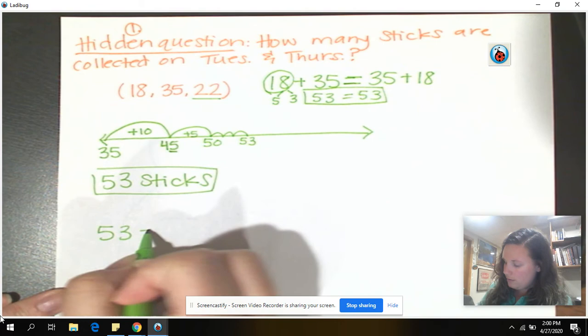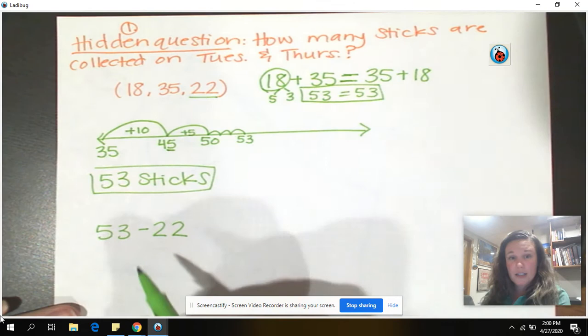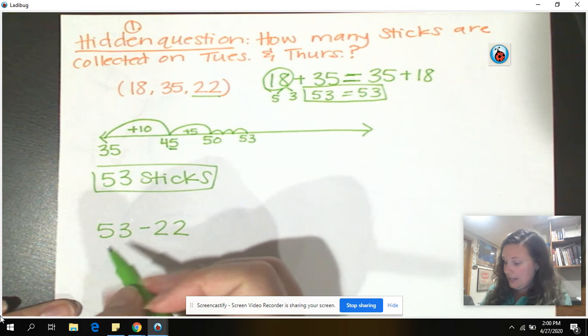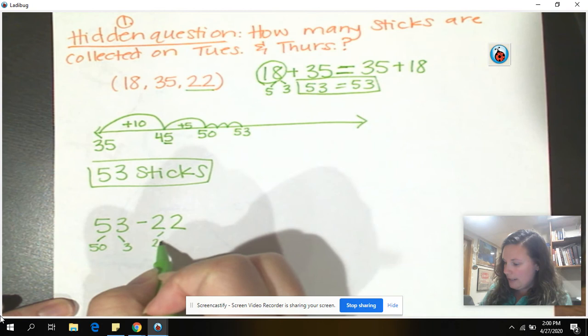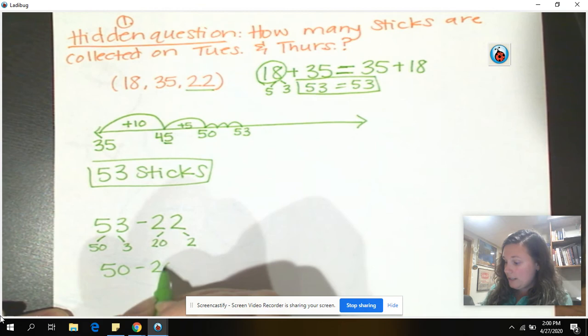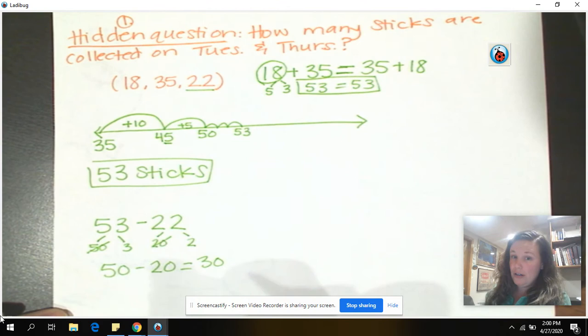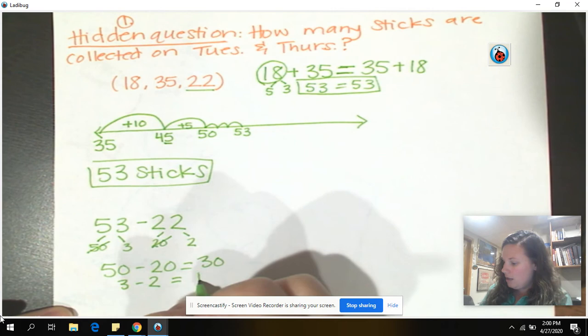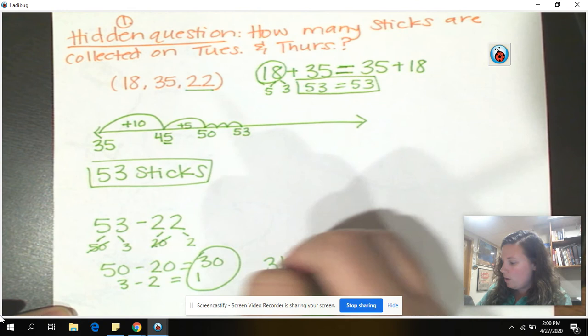This is just a straight subtraction problem now. I could subtract pretty easily. Basically, if I decompose into my place value, I had my 50 here and 3 here decompose into my 10s and my 1s. So 50 minus 20 gets you to 30 exactly. Now remember, cross those off so you don't accidentally use them again. And then 3 minus 2 is our 1. So we combine these together for an answer of 31 sticks total.